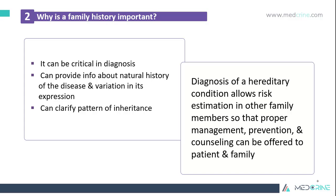A family history can be critical in the diagnosis of genetic problems or diseases. It can provide information about the natural history of the disease and the variation in its expression. A good family history on genetic illnesses can clarify the pattern of inheritance. A diagnosis of a hereditary condition allows risk estimation in other family members, so that proper management, prevention, and counseling can be offered to the patient and their families.